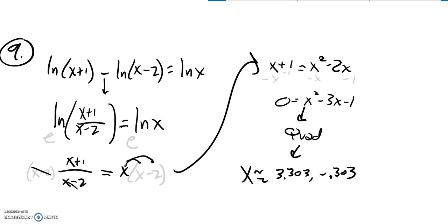And now what I want to do is check and make sure that neither of these answers make me take the natural log of a negative number. And if I plug this negative number in, I'd be going natural log of negative here, natural log of negative here. So I'm going to throw that out. This one checks out. I'm always going natural log of positive numbers with that value. So that's my answer.